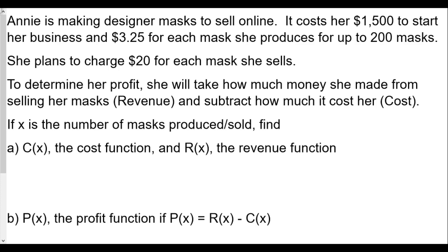Welcome everybody. This is our MRS 21 Fall 2020 midterm review, question number two. This one deals with a word problem — we're going to be given information and come up with functions. Annie is making designer masks to sell online. It costs her fifteen hundred dollars to start her business and three dollars and twenty-five cents for each mask she produces, for up to 200 masks. She plans to charge $20 for each mask she sells. If x is the number of masks produced or sold, find C(x) the cost function and R(x) the revenue function.